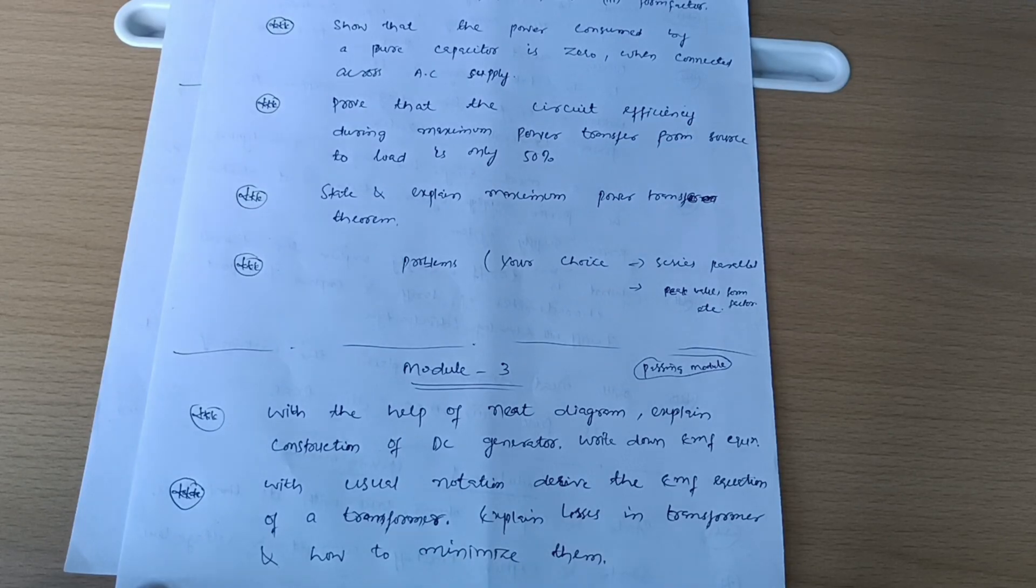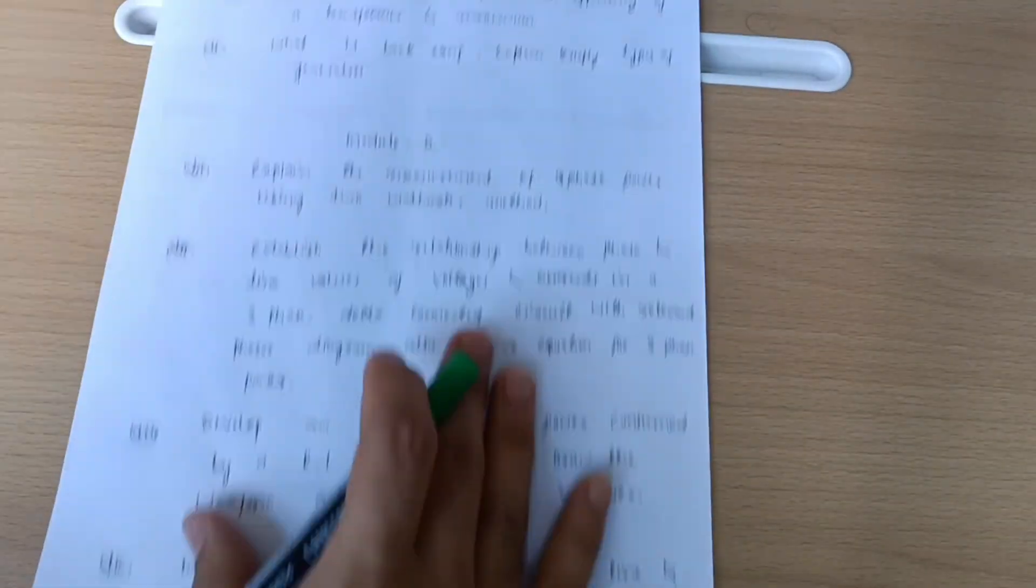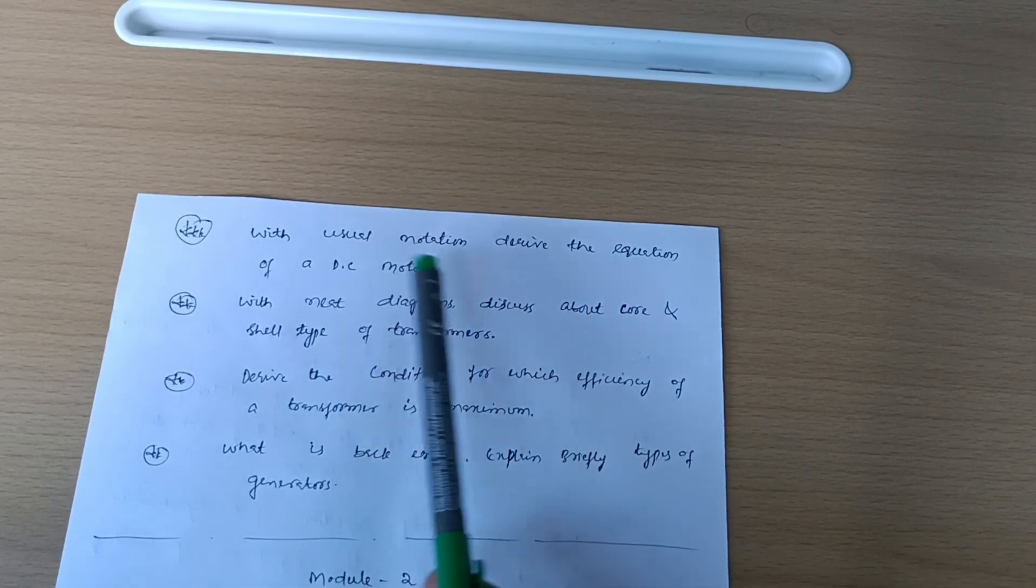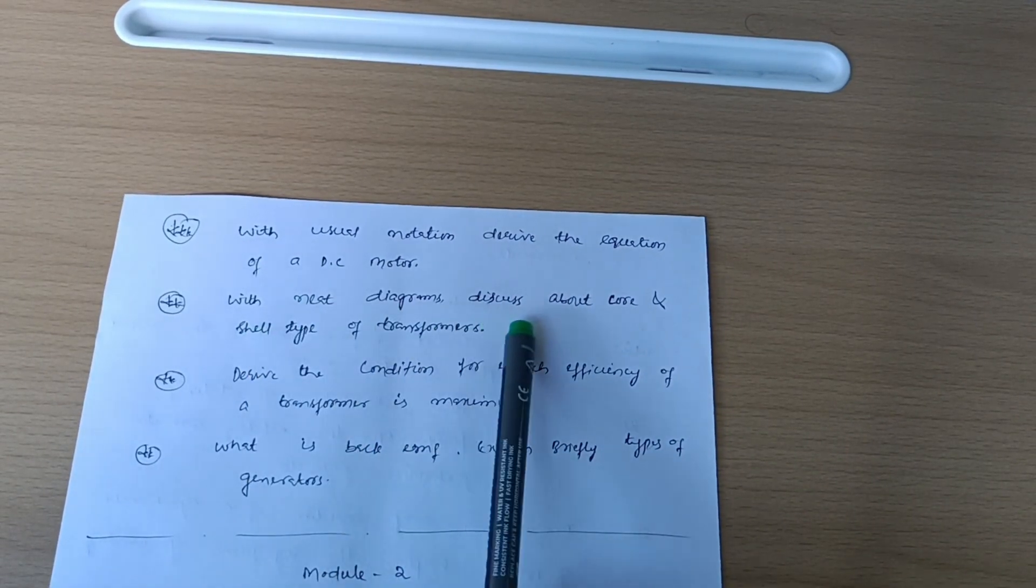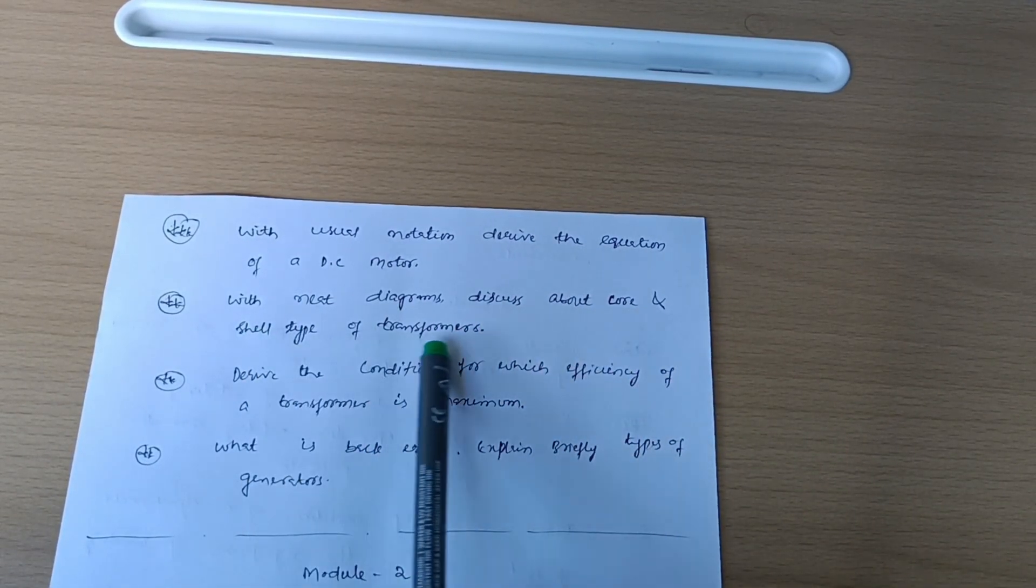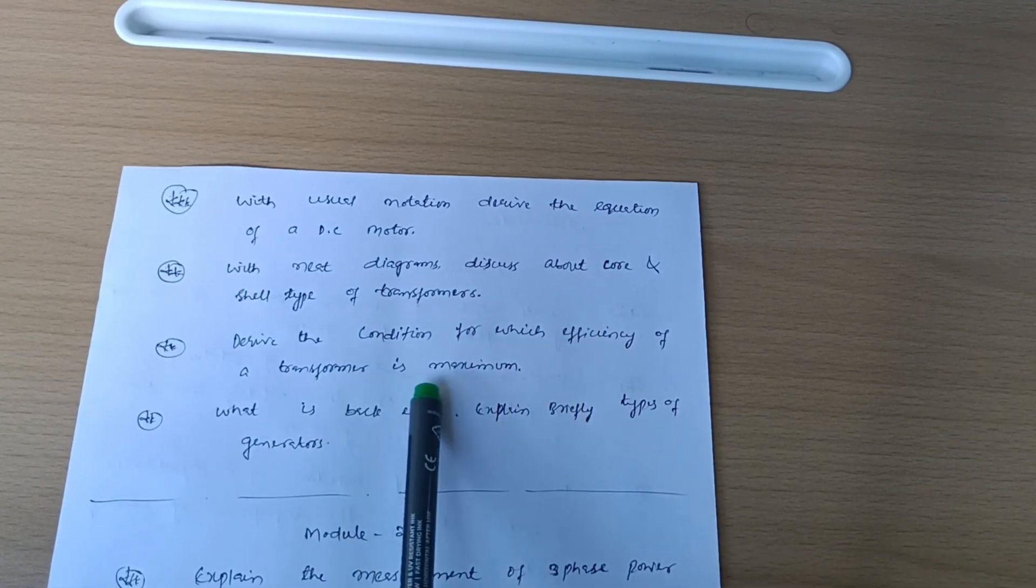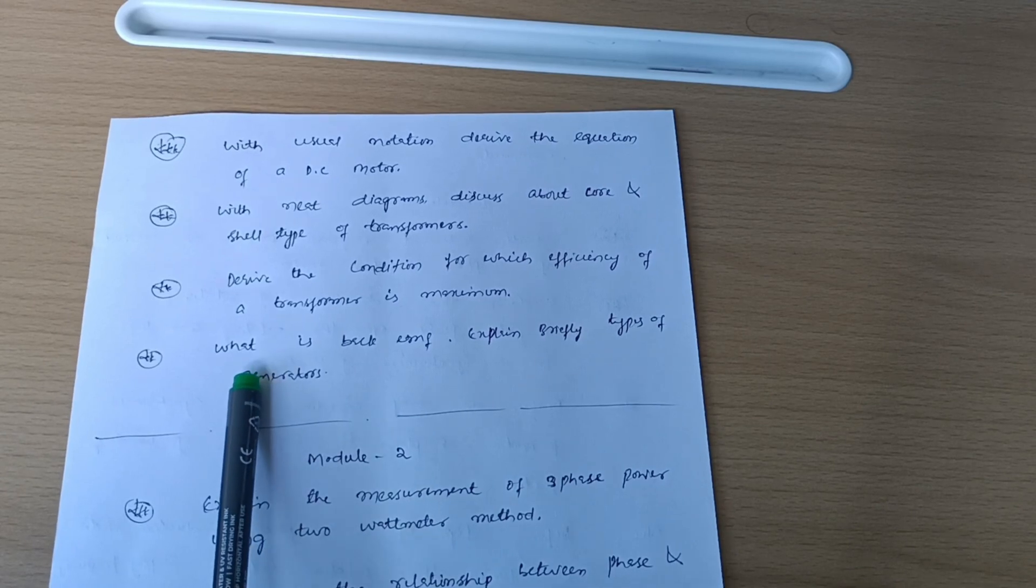Next four questions from Module 3 are here. With usual notation, derive the equation of a DC motor. With neat diagrams, discuss about core and shell type of transformer. Derive the condition for which efficiency of a transformer is maximum. What is back EMF? Explain briefly types of generators.